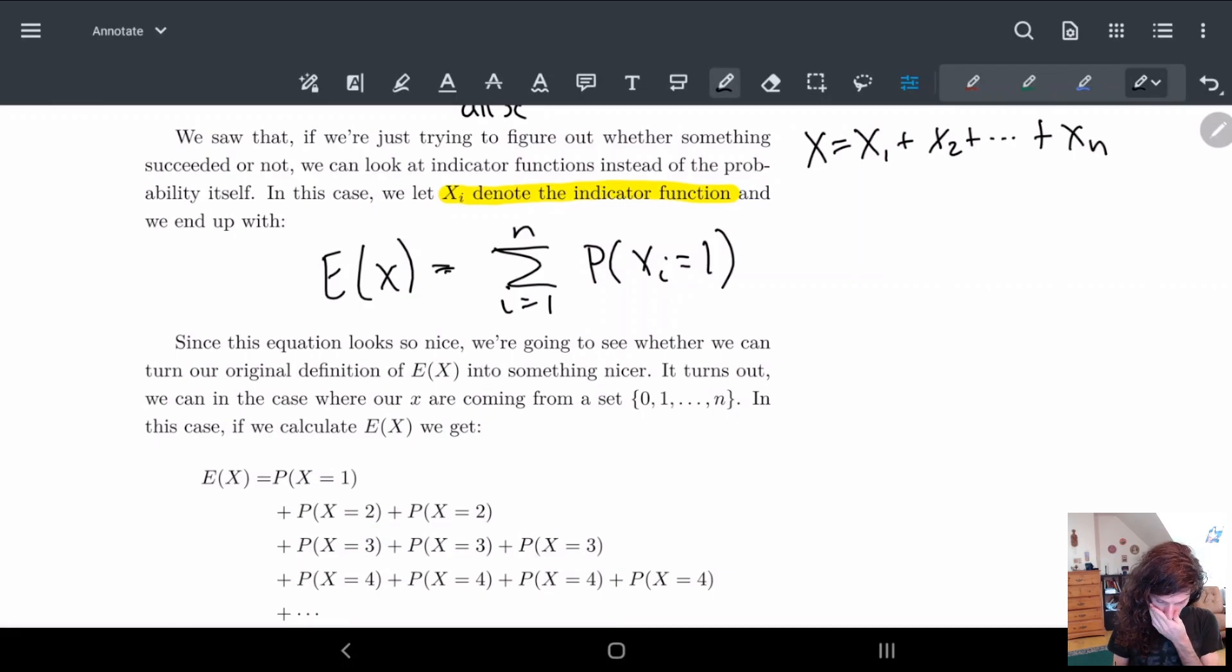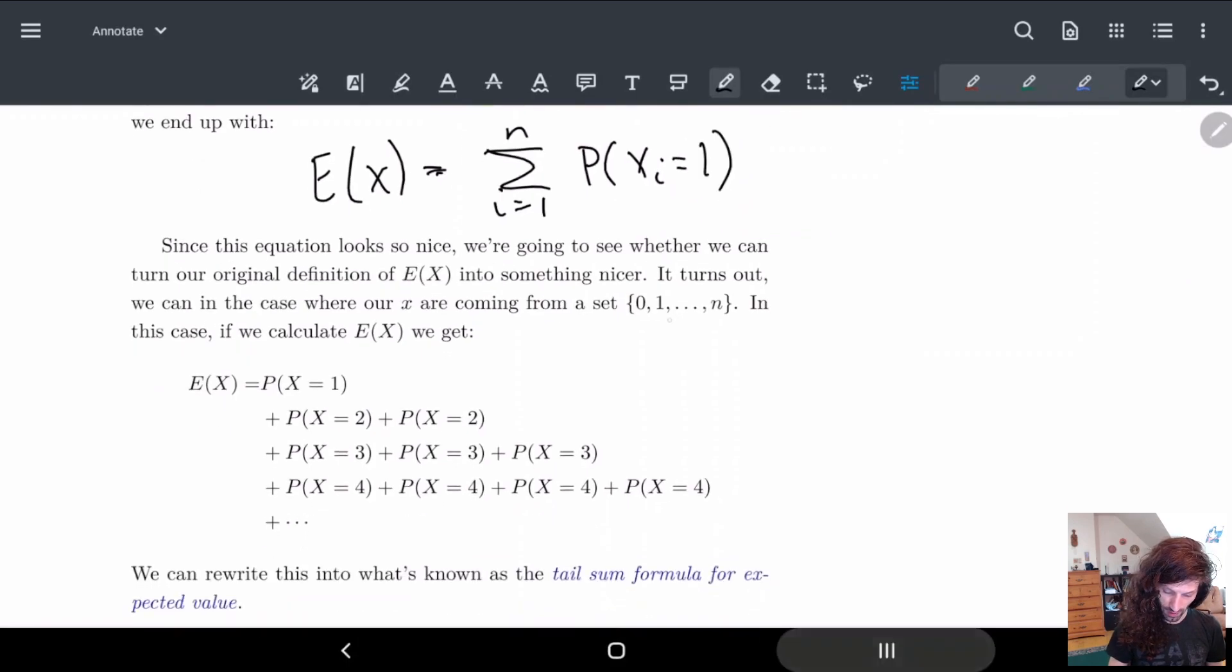What we're gonna do is look at the case where X is coming from some set. Suppose we have some set like this, very similar to what we're doing here where we're going over i equals one through n. Let's see what we get for the expected value.